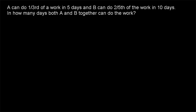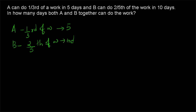Now, example number two: A can do one-third of a work in five days and B can do two-fifths of the work in ten days. In how many days can both A and B together complete the work? A is doing one-third of the work in five days and B is doing two-fifths of the work in ten days.